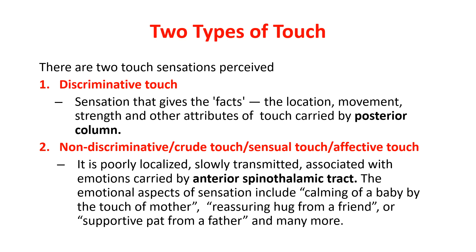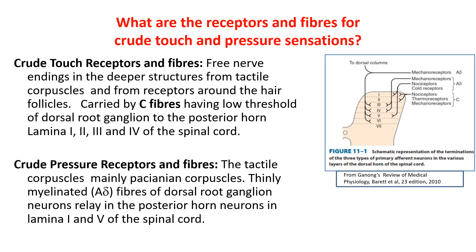The crude touch is carried by the anterior spinothalamic tract. The emotional aspects of sensation include calming of a baby by the touch of a mother, a reassuring hug from a friend, or a supportive pat from a father. The receptors include free nerve endings located in the dermis and deeper structures, tactile corpuscles, and receptors around hair follicles.